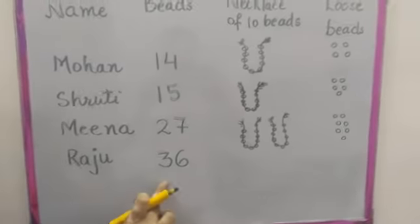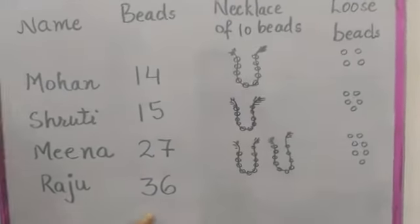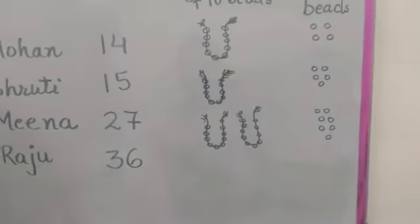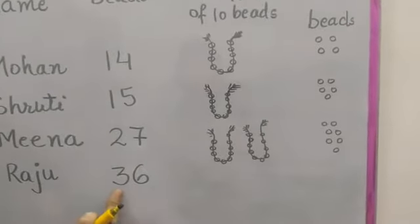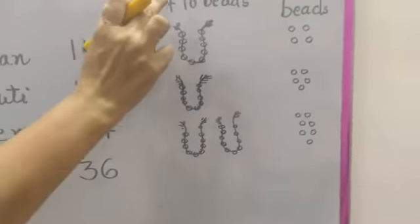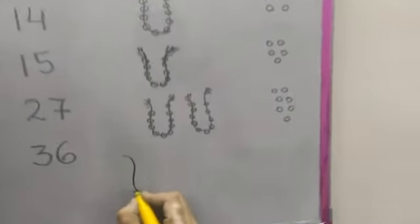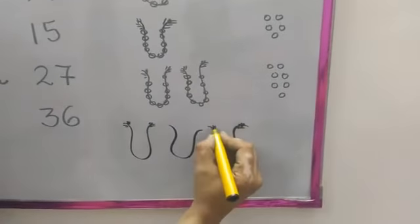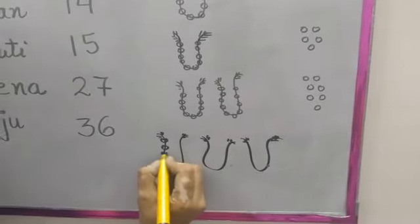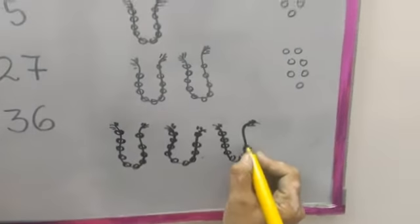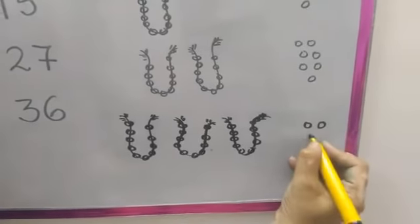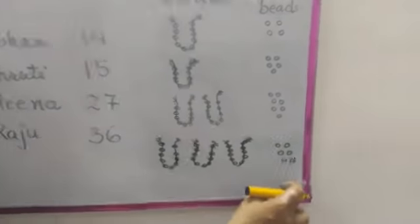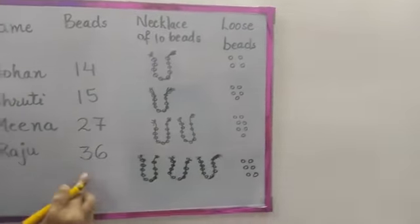Raju wants 36 beads. Now you tell me, students — how many necklaces of 10 beads and how many loose beads will he get? 36 means 3 tens and 6 ones. So 3 necklaces of 10 beads and 6 loose beads. 3 tens means 30, and 6 ones, so 30 plus 6 equals 36.